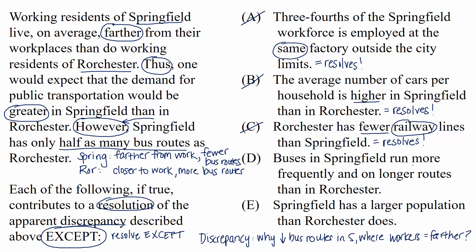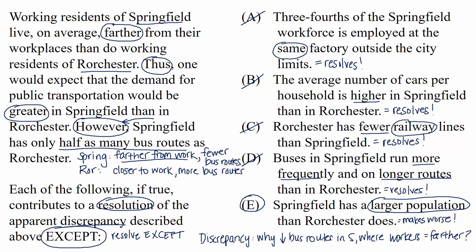Choice D: buses in Springfield run more frequently and on longer routes than in Rochester. That helps resolve the situation. There are fewer routes in Springfield, but they run more frequently and on longer routes, so it's very possible that Springfield buses could transport more people to farther places, even though there are fewer routes overall. We can eliminate this since it's a possible resolution. Finally, Choice E tells us that Springfield has a larger population than Rochester. When we think about the impact of this, it just makes the situation even more surprising. Springfield has a larger population, people farther from work, and fewer bus routes. This is our answer because it does not contribute to a resolution — in fact, it makes the discrepancy worse.